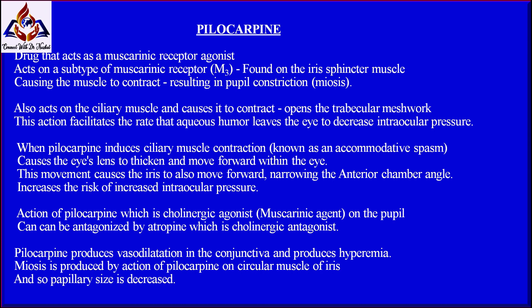This action facilitates the rate at which aqueous humor leaves the eye, thereby decreasing intraocular pressure. When pilocarpine induces ciliary muscle contraction — known as accommodative spasm — it causes the eye's lens to thicken and move forward. This movement causes the iris, located immediately in front of the lens, to also move forward, narrowing the anterior chamber angle, which increases the risk of raised intraocular pressure.